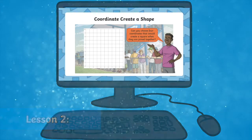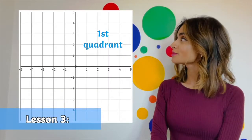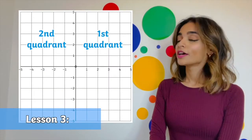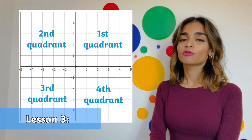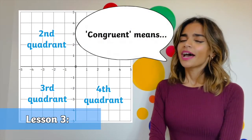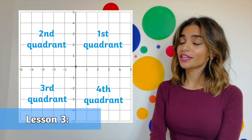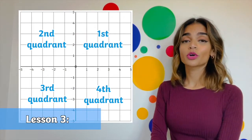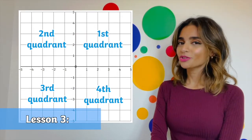In lesson three, children will learn to reflect a shape in four quadrants and understand the meaning of the word congruent. They will also identify difficulties in reflecting shapes in different quadrants.